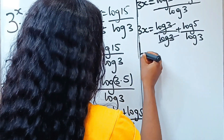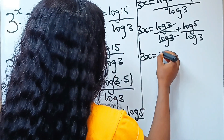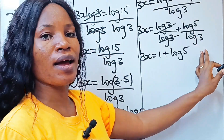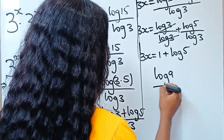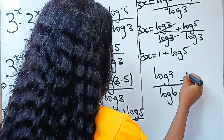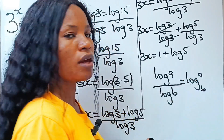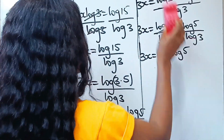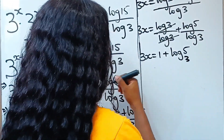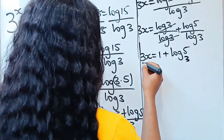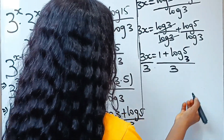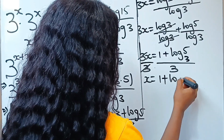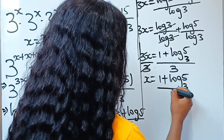We divide log 3 by log 3 to get 1, so 3x is equal to 1 plus log 5 divided by log 3. Now, log A divided by log B is the same thing as log A base B. So log 5 divided by log 3 becomes log 5 base 3. We are looking for x, so we divide both sides by 3, giving us x is equal to 1 plus log 5 base 3, all divided by 3.